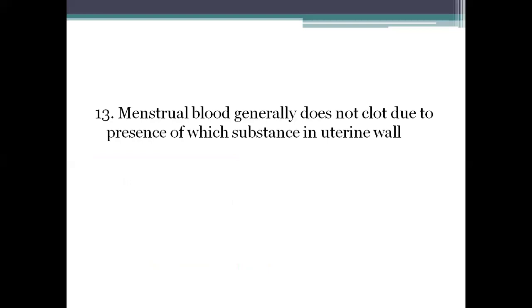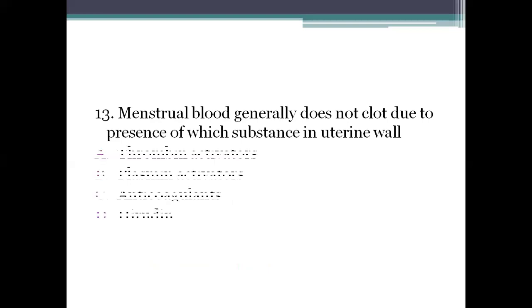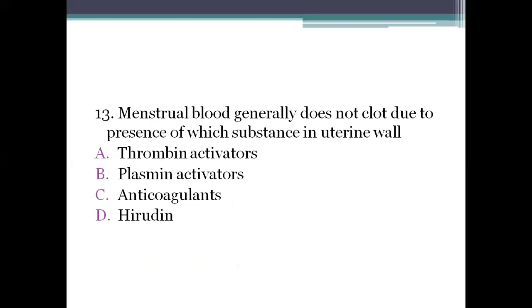Next question: menstrual blood generally does not clot due to the presence of which substance in the uterine cavity? Option A: thrombin activators. Option B: plasmin activators. Option C: anticoagulants. Option D: heparin. The right answer is plasmin activators. Because of plasmin activators, menstrual blood generally does not clot.